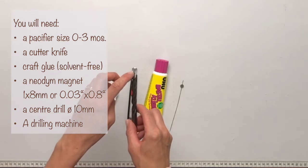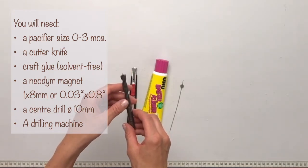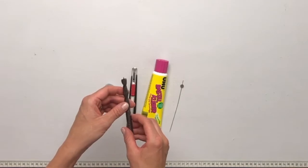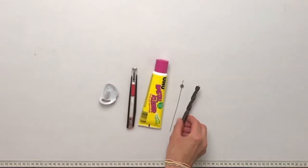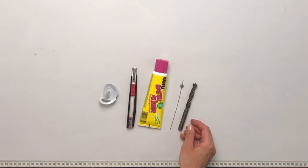That's what it's called and it has a point in the middle. That makes it easier. So if you have something like that I would recommend you use it, but it'll also work with a normal drill. And then of course you need the drilling machine which is not in the picture.